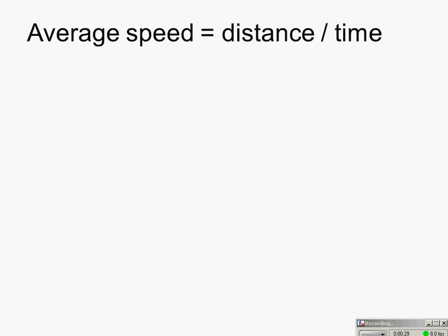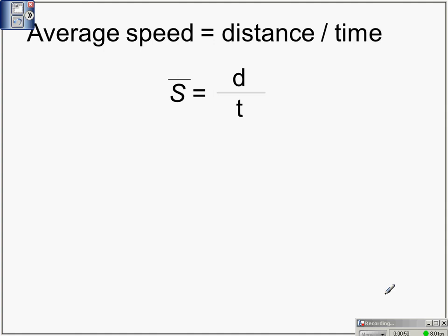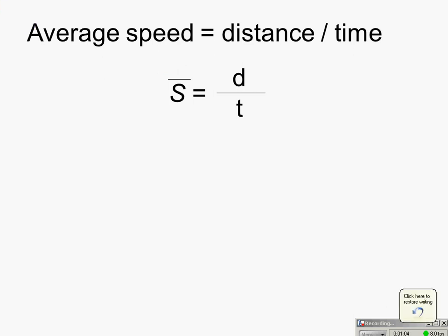The equation for average speed: if you're looking for the average speed of a trip — say it's 120 miles and it took two hours — you can figure out your average speed. It doesn't mean you were going that speed the entire time; it's just an average. The line over the s means average, and the equation says average speed equals distance divided by time.